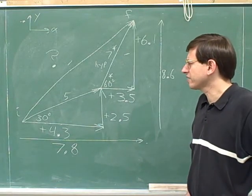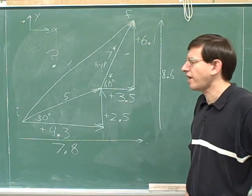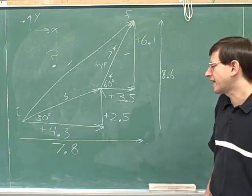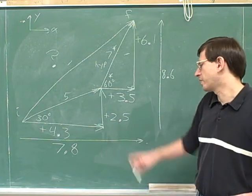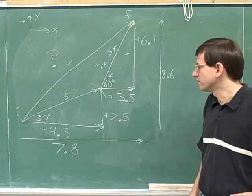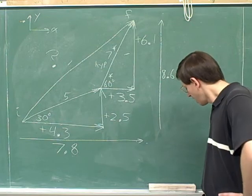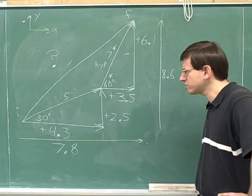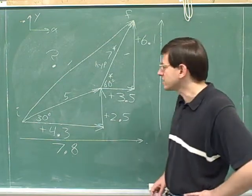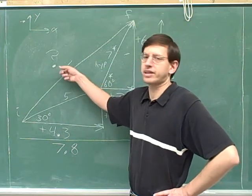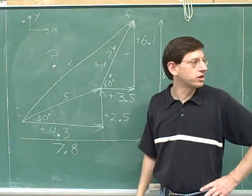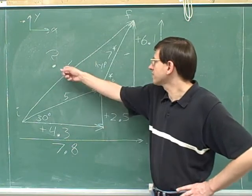That gives us a good way to describe our overall displacement. You might say the answer is that we're 7.8 meters to the right of where we started and 8.6 meters above where we started. However, what we usually like to do in physics with our final answer is refer to the overall vector, not to the components.